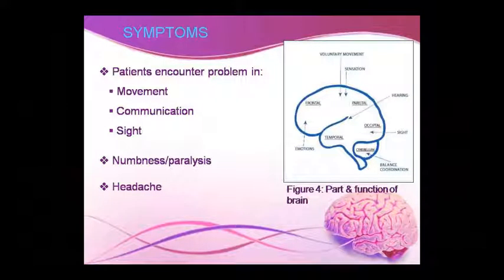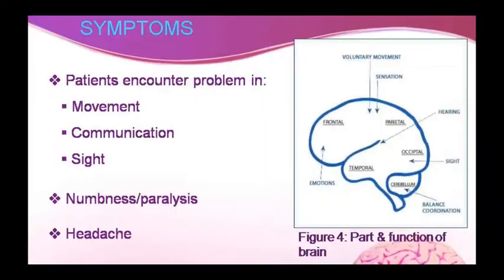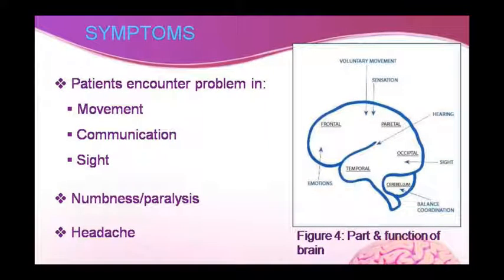The symptoms of stroke are: the patient cannot perform movement or communication, there is a problem with sight, the body parts experience numbness, paralysis, and pain. Looking at brain parts and functions: the frontal and parietal parts control voluntary movement and sensation. Frontal controls emotions, parietal controls voluntary sensation and hearing junction, occipital controls sight, cerebellum controls balance and coordination, and temporal controls hearing and sight.